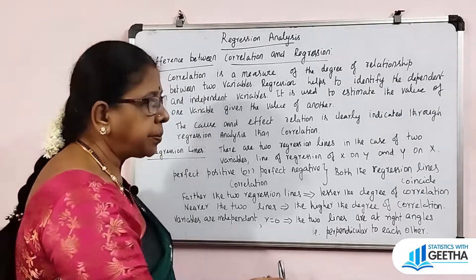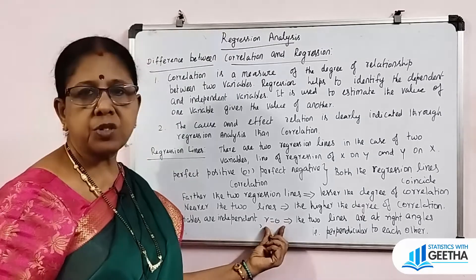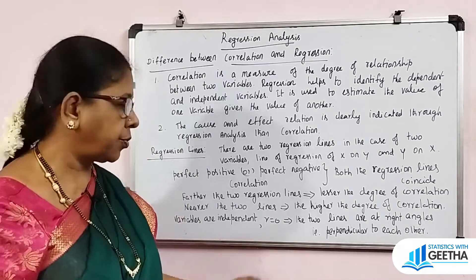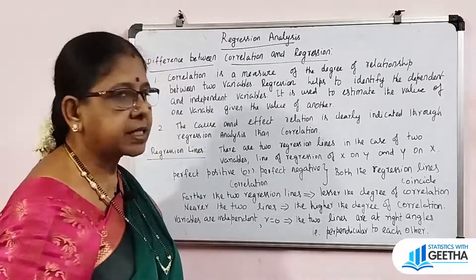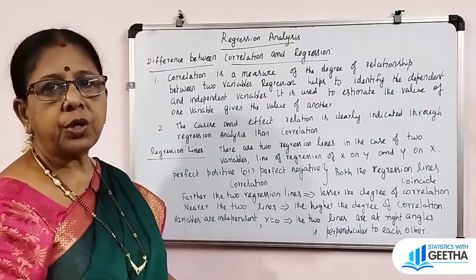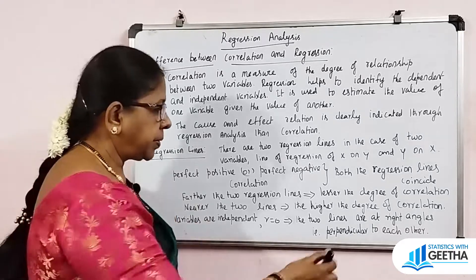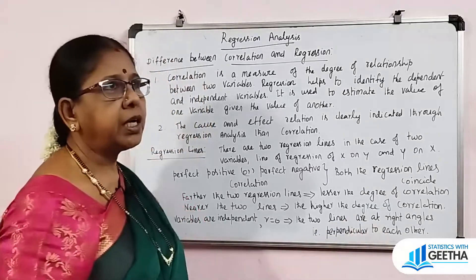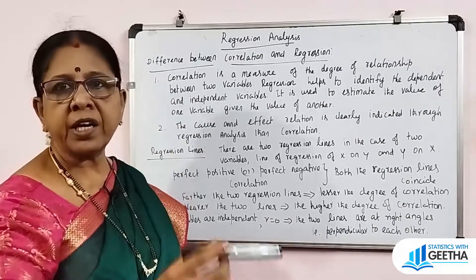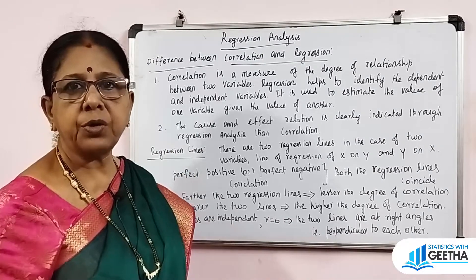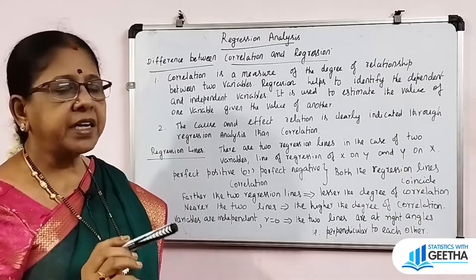When the variables are independent, the correlation is zero. In that case, what happens to the regression lines? The two lines are at right angles — they are perpendicular to each other, cutting at 90 degrees. One line is parallel to the x-axis and the other is parallel to the y-axis.